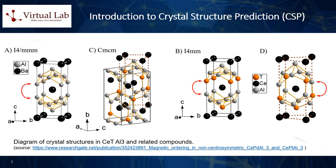Crystal structure is arguably the most important piece of information about a material, as it determines, directly or indirectly, pretty much all properties of a material even before the material is synthesized experimentally. Knowing the structure, one can in fact compute a large number of desirable physical properties, thus establishing the crucial importance of crystal structure prediction, or CSP, methods for computational materials design and discovery.